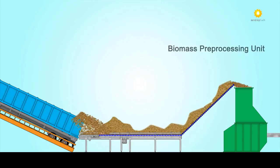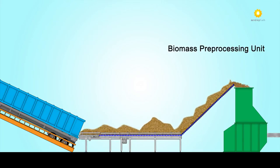After the chips are automatically sorted and foreign material removed, they are conveyed up to the biomass pre-processing unit where they are converted into fine particles, making them highly reactive for the next step in the process.